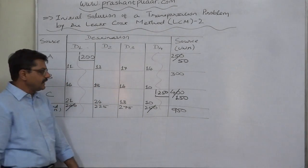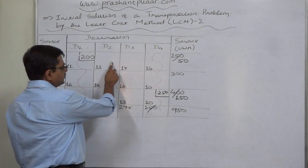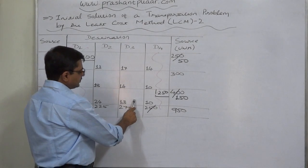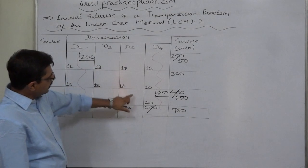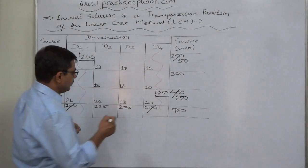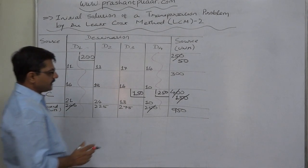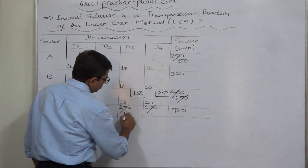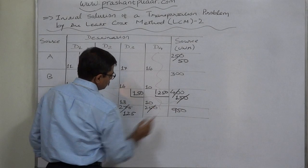From the remaining table, there is again a tie between cells A-D2 and C-D3, both with a least cost of 13. If we allocate to A-D2, the allocation would be: demand 225, supply 50 — lower is 50. If we allocate to C-D3, demand 250, supply 150 — lower is 150. We prefer the higher possible allocation, so we select C-D3 and allocate 150 units. Supply of source C is now exhausted; remaining unsatisfied demand of D3 is 125. We cancel the row of source C.